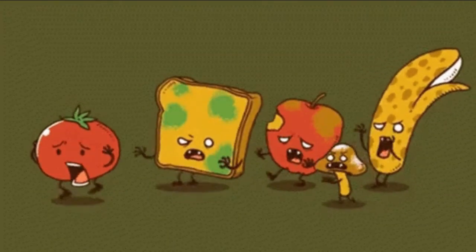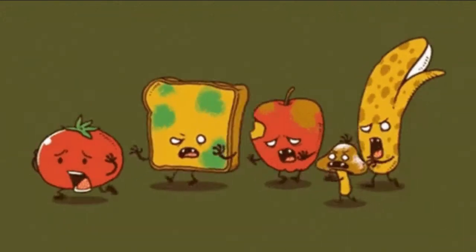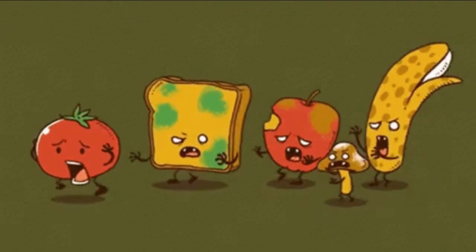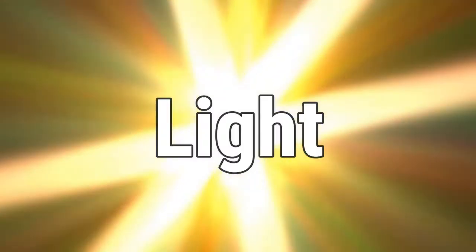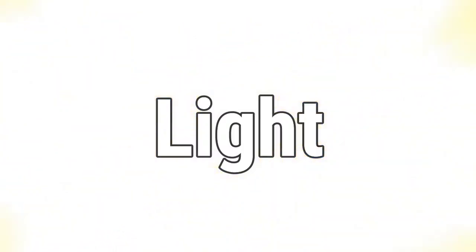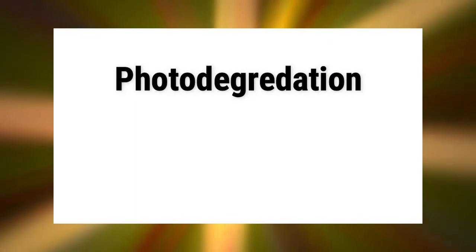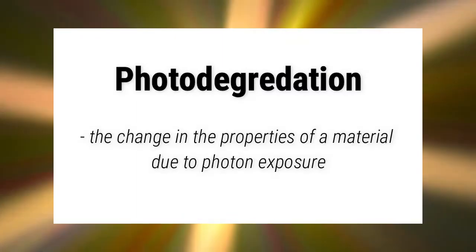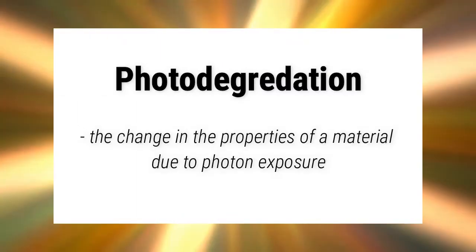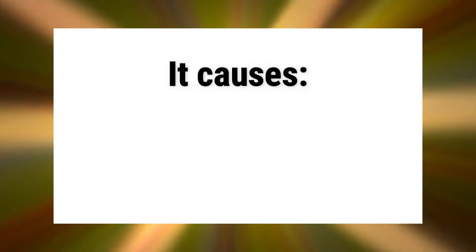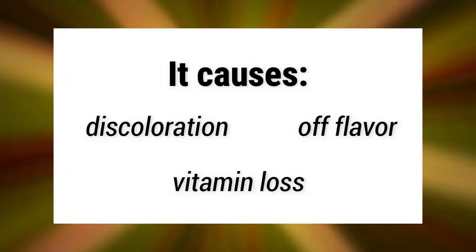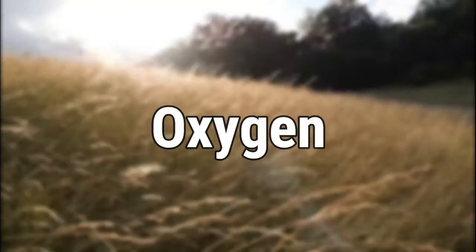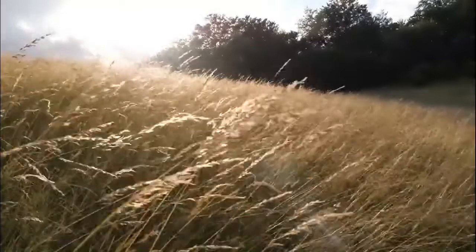Chemical reactions in food are responsible for changes in color and flavor during processing and storage. The first factor is light. Light can cause photo degradation, which means a change in the properties of a material due to photon exposure. This leads to discoloration, off-flavor, and vitamin loss of a product.